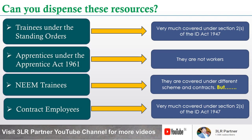Contract employees are relatively easy to dispense. However, one problem arises when counting the number of workers for application of Chapter 5A and 5B - you are required to count contract employees in that total. If you hire contract employees lawfully under the Contract Labour (Regulation and Abolition) Act, have a valid contract, and do not supervise them directly, the contractor who employs them is their employer, not the principal employer. Nevertheless, you must look into all these aspects carefully when dispensing their services.